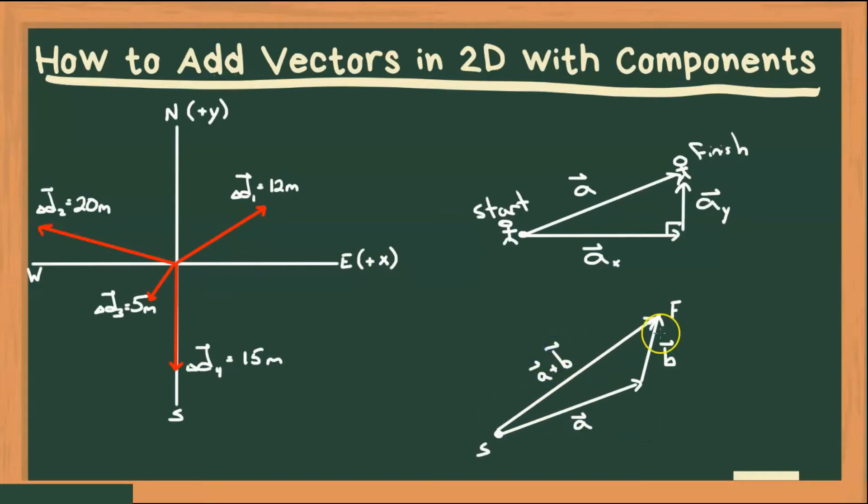So how would I actually find A plus B? Now this is a triangle, so you could use sine law or cosine law. You obviously can't use your trig ratios because it's not a right angle triangle. But if I were to add more than two vectors, we wouldn't have a nice triangle. So let's just look at this triangle and how we would use components to add vectors A and B.